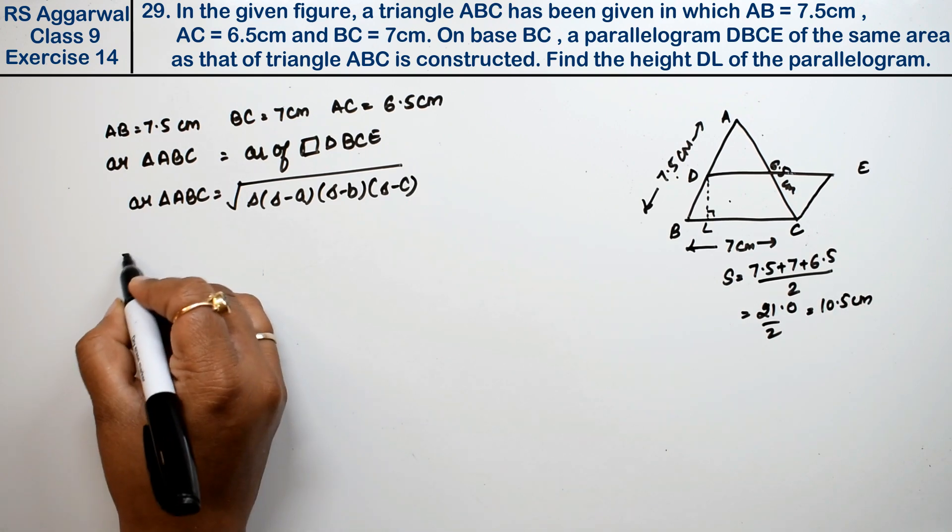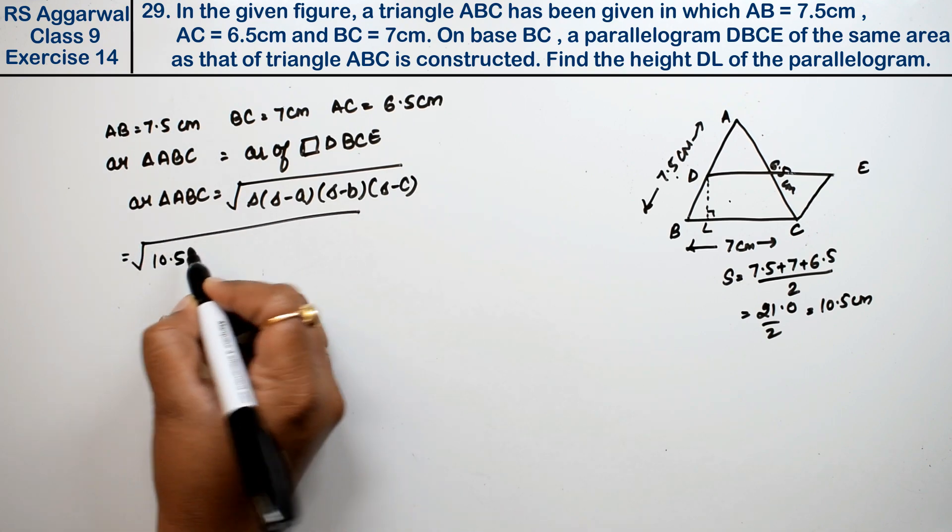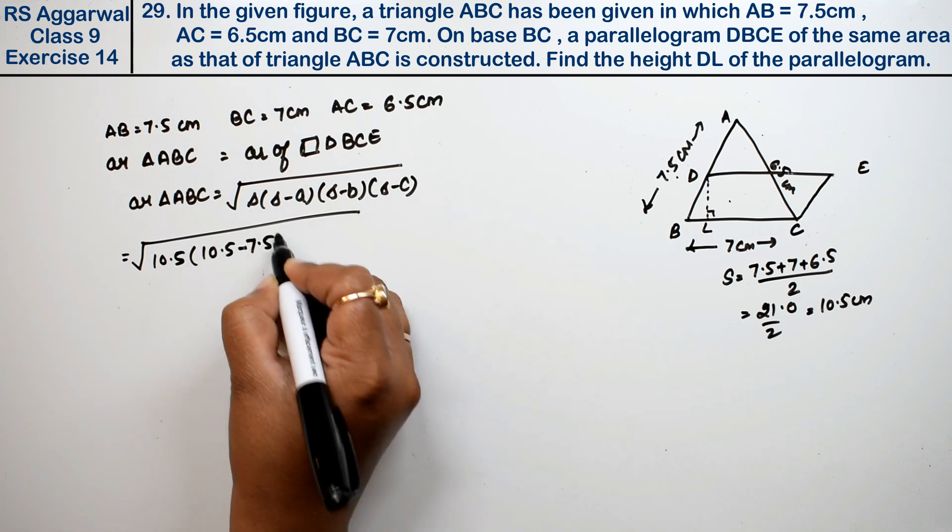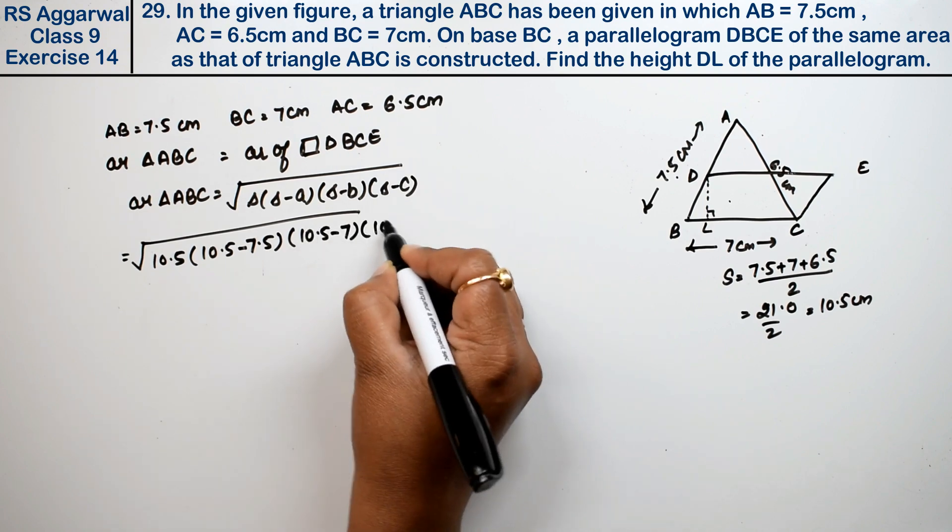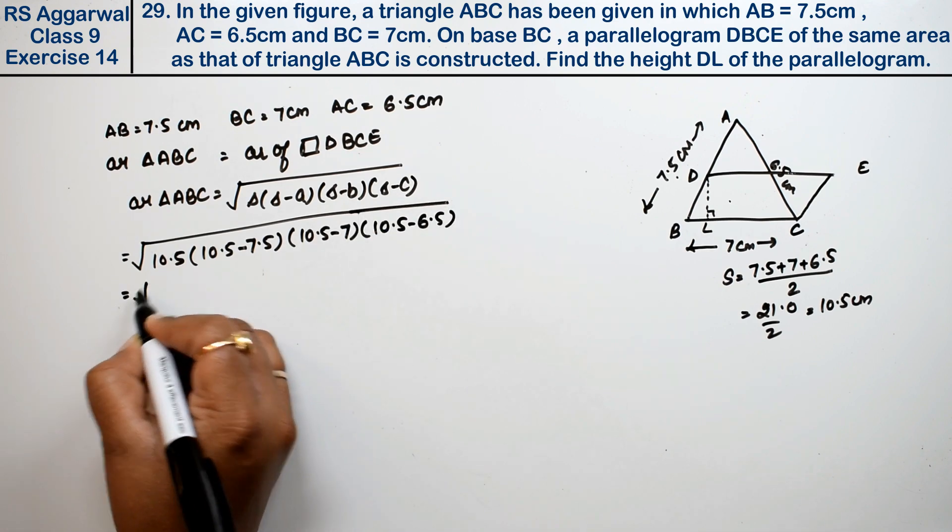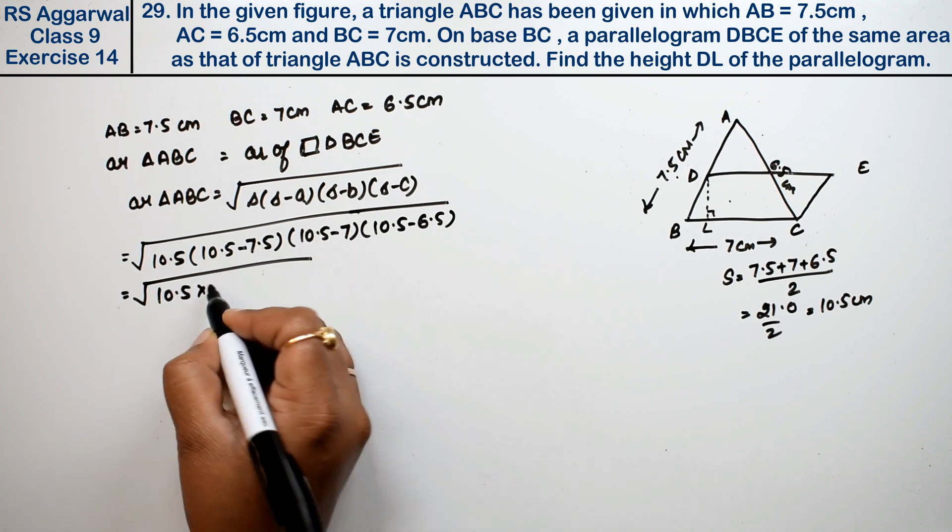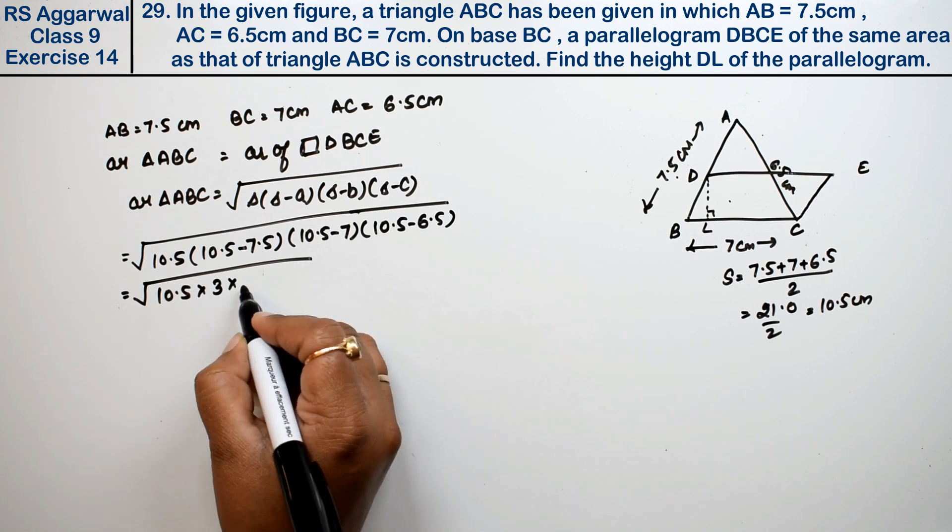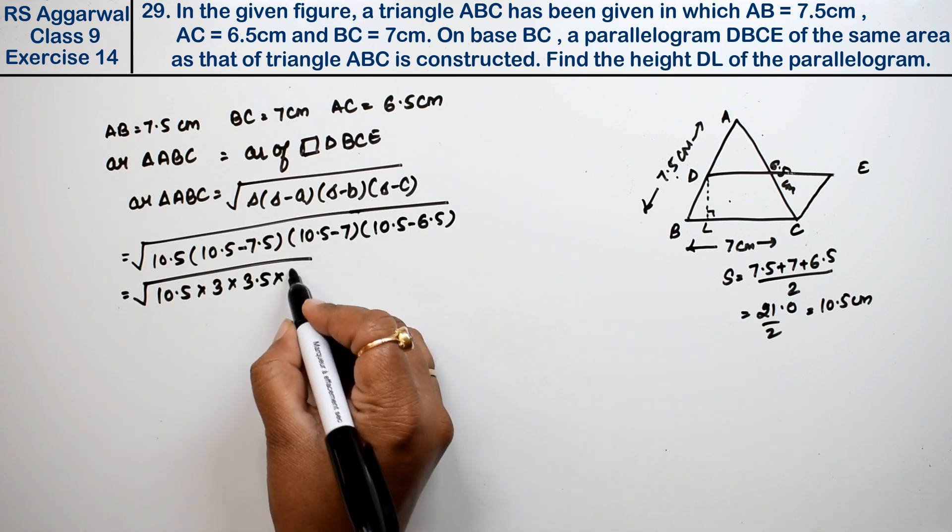Now substituting S in place: square root of 10.5 times 10.5 minus 7.5 times 10.5 minus 7 times 10.5 minus 6.5. This becomes 10.5 times 3 times 3.5 times 4.